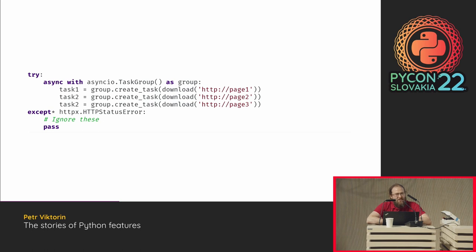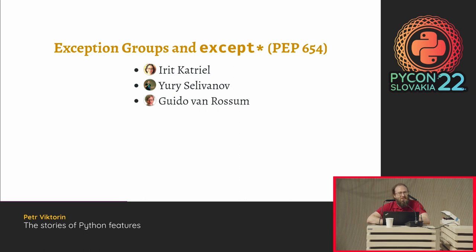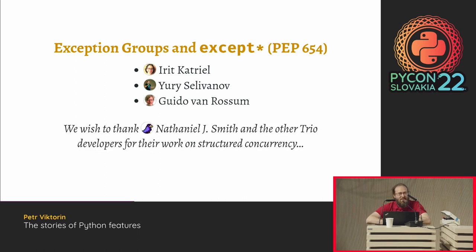How did this feature get in? It was added by the main async.io developers. Irit is a relatively new Python core developer who did a lot of the work. Yuri has a lot of knowledge about async.io and started a company that uses it heavily. And there's also the original author of async.io — Guido. The PEP also has a note thanking Nathaniel for his work on Trio that was essentially copied.